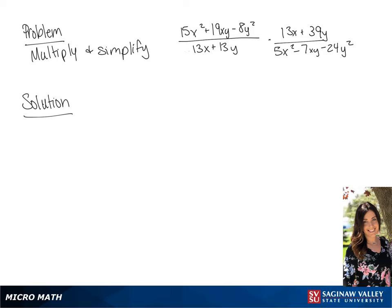We're going to start by factoring the first fraction. So in the numerator, we are going to have 3x minus y times 5x plus 8y. The denominator, we will have 13 times x plus y.